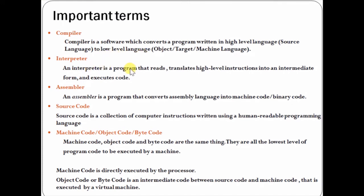An interpreter also reads and translates high level instructions to machine code and executes the code. The main difference between compiler and interpreter is that a compiler converts the whole complete program at a time to object code or machine code. But an interpreter reads line by line — it converts a single instruction to machine code and then executes it. An assembler converts the assembly language program to machine code. So what is source code and what is object code? Source code means the program written in high level programming language — instructions that are human readable.